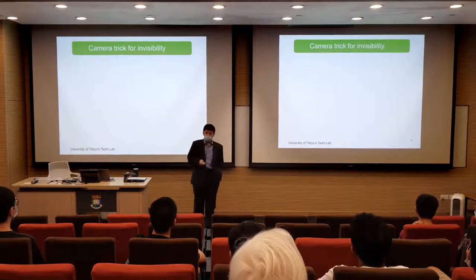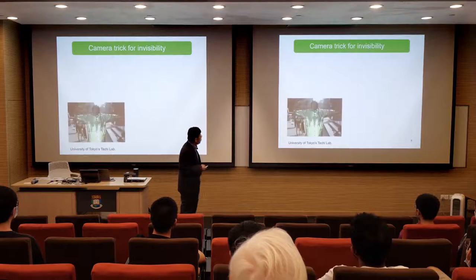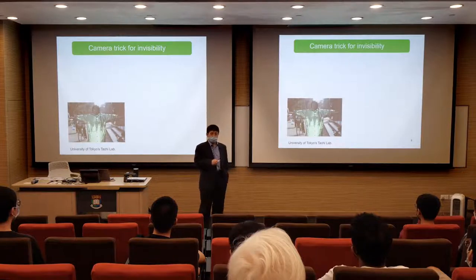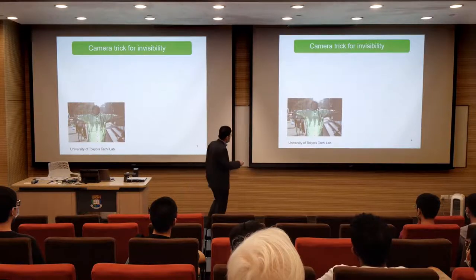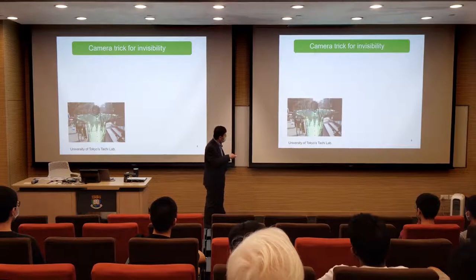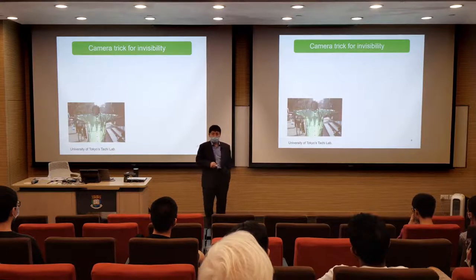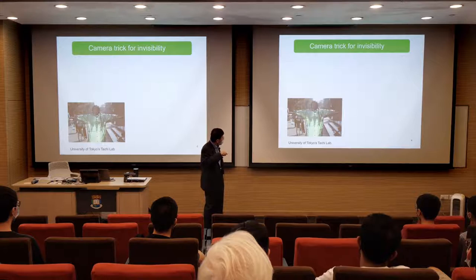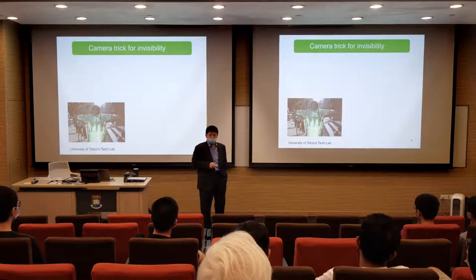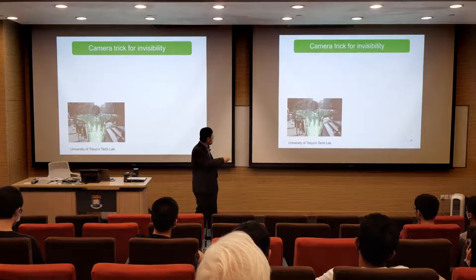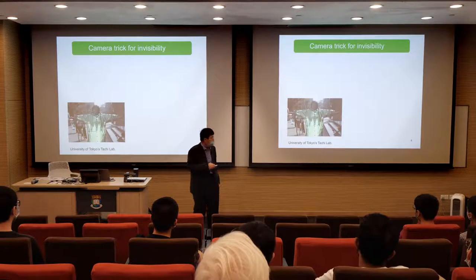Here's another interesting example — probably a few years back you may have read about an invisibility cloak created by a Japanese group. From this video clip, you can see a guy wearing a coat, and if you look from the front, you can see through him — you can see whatever is behind him. This looks pretty much like an invisibility cloak. Although you can still see the green raincoat, at least it has an essential ingredient: you can see through it.